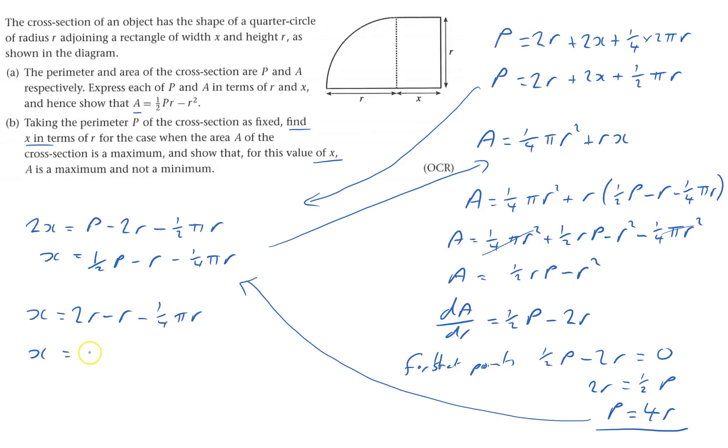And so that says that x equals r minus a quarter πr, or x equals, take out an r, 1 minus a quarter π. And that's what x is.